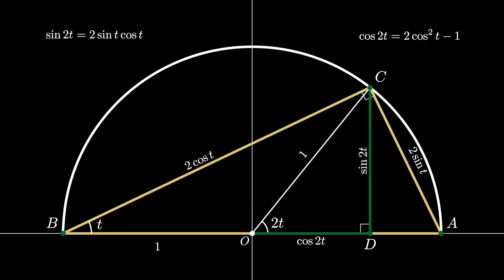The identity on the left sine of 2t equals 2 times the sine of t times the cosine of t is the double angle identity for the sine function. And the identity on the right cosine of 2t equals 2 cosine squared of t minus 1 is the double angle identity for the cosine function.